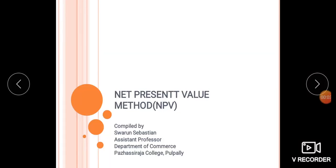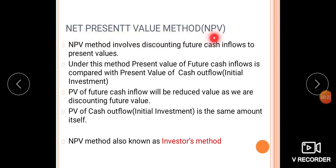Good morning everyone. Today we will discuss the Net Present Value method, the NPV method. This is another example of a capital budgeting technique — it is a discounting capital budgeting technique. The NPV method involves discounting future cash inflows into present values.